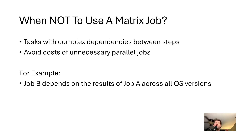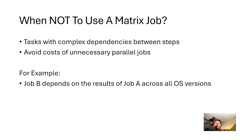By the same token, there are times when you really don't want to use a matrix job. They are not ideal for tasks with complex dependencies between steps, or where you want to avoid the cost of running unnecessary parallel jobs. For example, if job B depends on the results of job A across all OS versions, a matrix won't be helpful — you'll need a different workflow structure. Matrix jobs are most useful when tasks can be truly parallel and independent. If you have conditional steps or dependencies across jobs, consider a custom job flow instead.